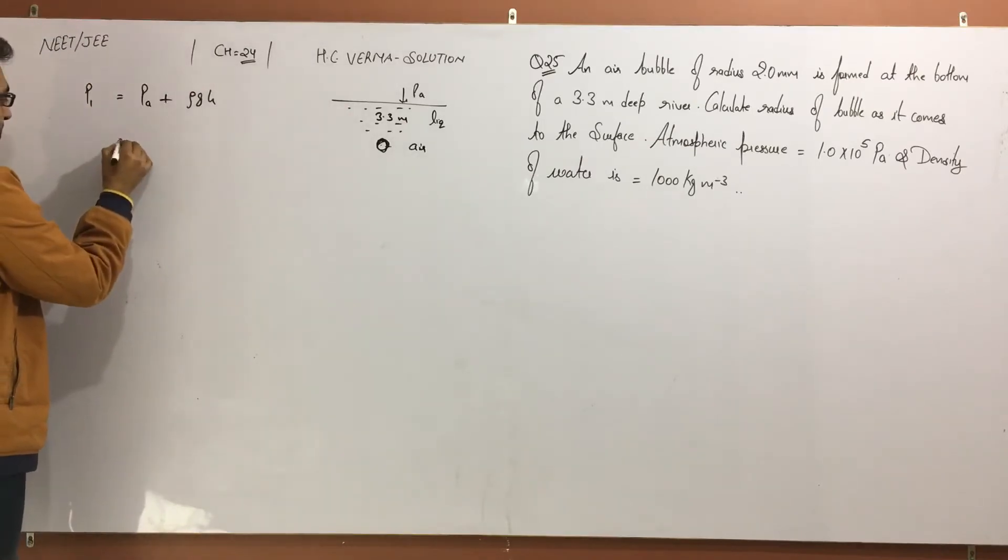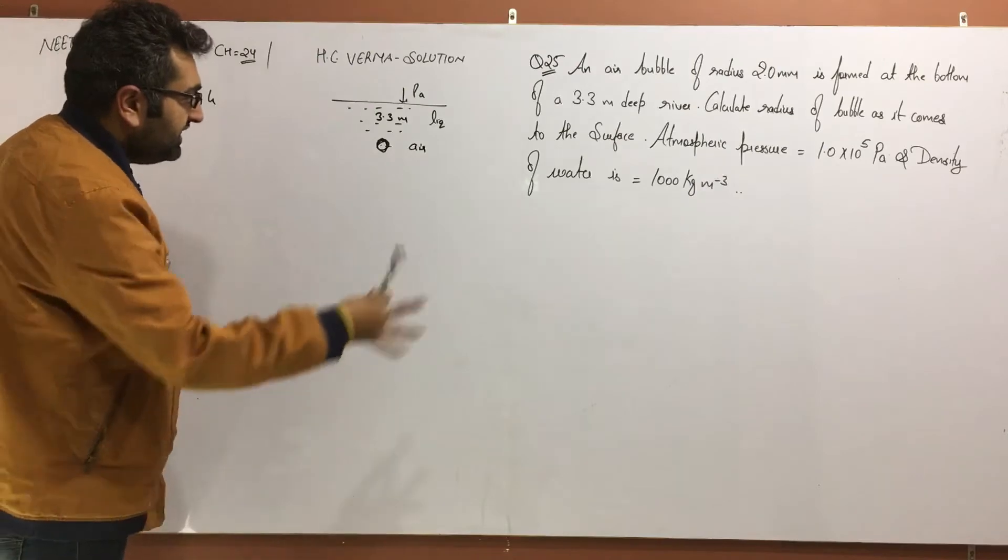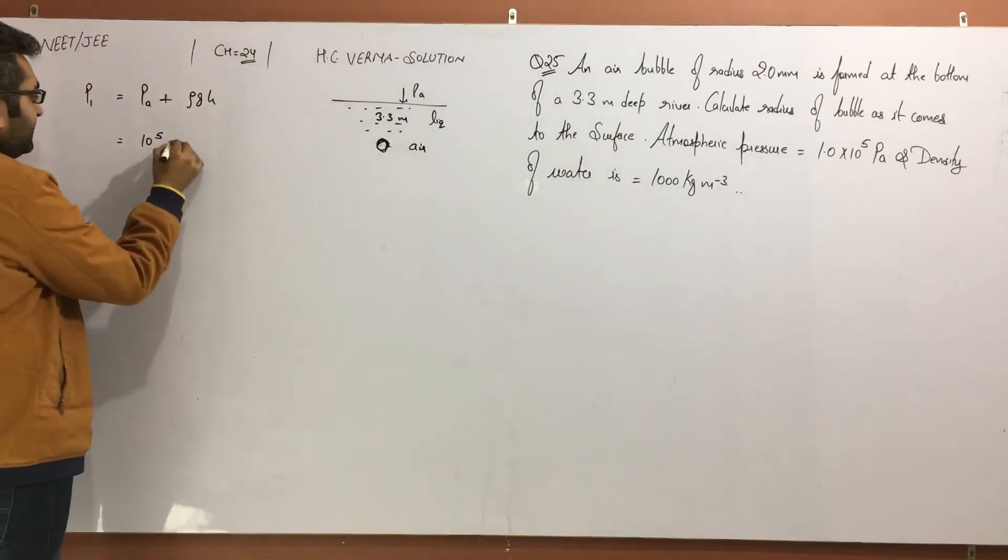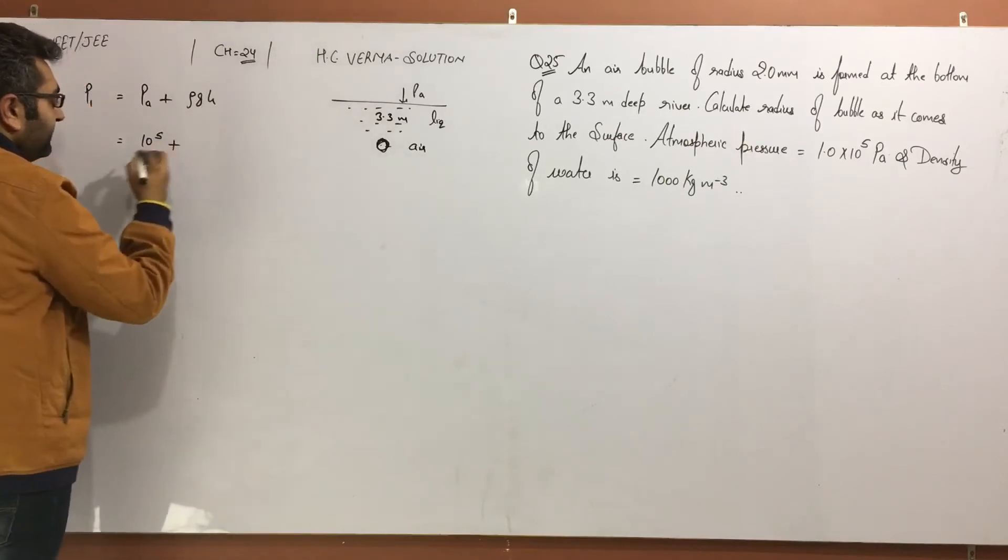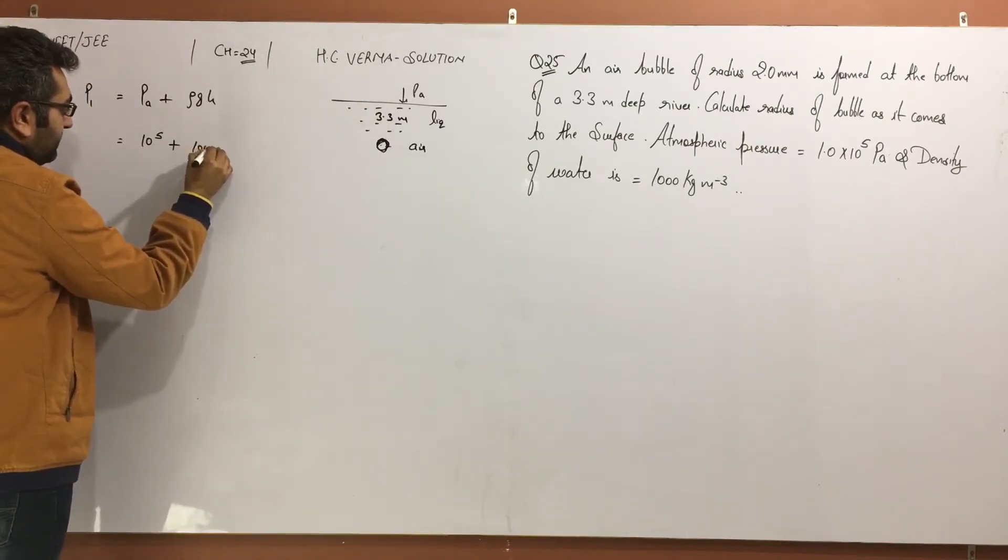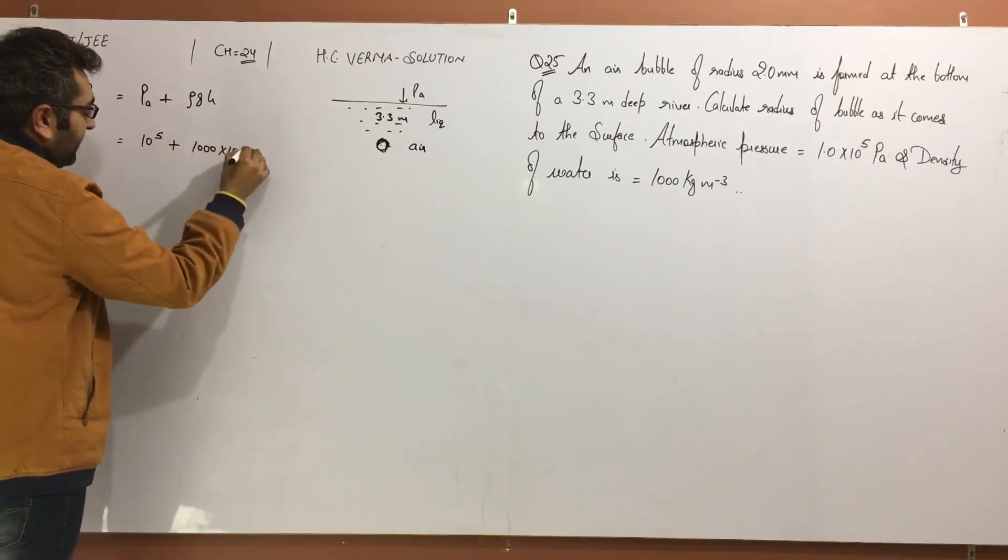Pressure is Pa plus ρgh. So Pa is how much? It is 10^5 Pascal. ρgh pressure by liquid column is density which is 1000 kg per meter cube, g value is 10, h is 3.3 meter.